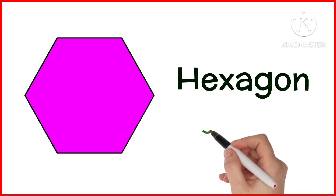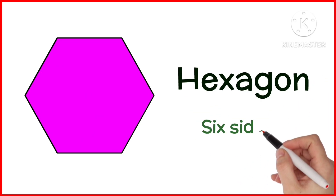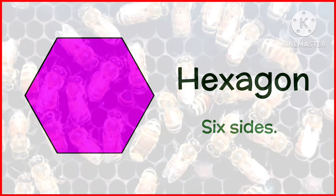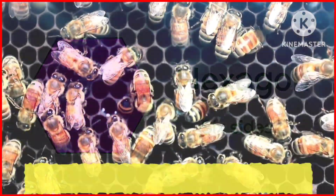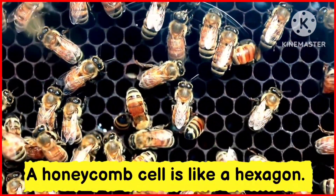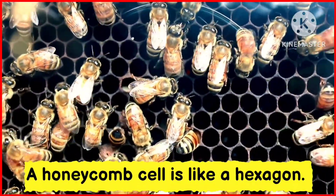Hexagon. A hexagon has 6 sides. A honeycomb cell is like a hexagon.